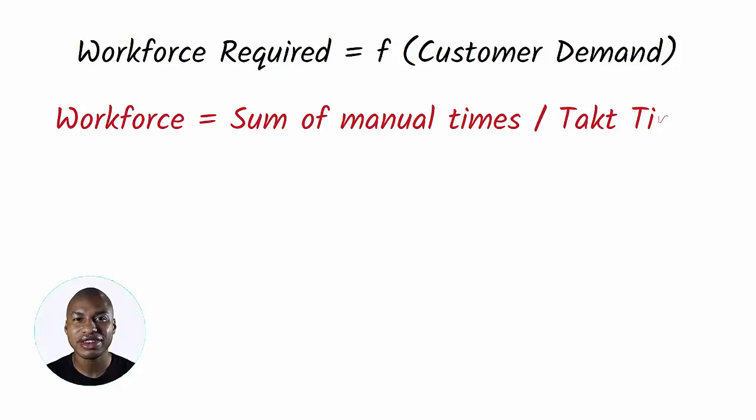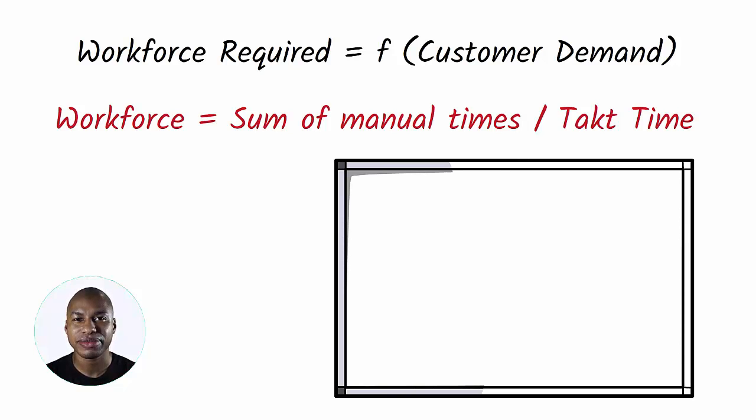Let's see some calculation examples for this production line with different takt time scenarios. If the takt time equals 125 seconds, the necessary workforce will be equal to 250 seconds divided by 125 seconds equals 2 people.